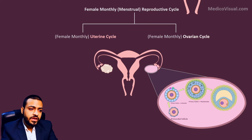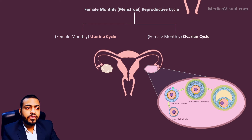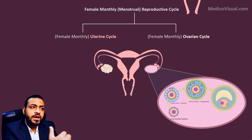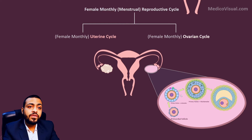In the first phase, 15 to 20 follicles start growing. Because follicles are growing, this part of the reproductive cycle is called the follicular phase of the ovarian cycle. As far as the ovarian cycle is concerned, the first phase is the follicular phase.